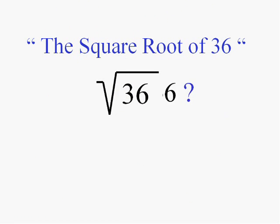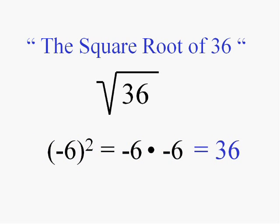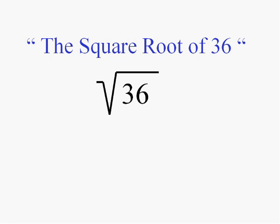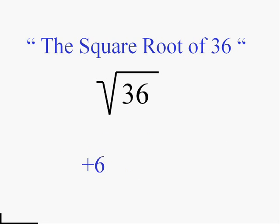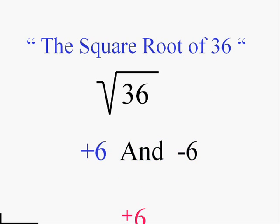The square root of 36 — could be negative 6, if you think about it, because negative 6 squared equals 36. Any positive square root is going to have two answers. The square root of 36 is going to have two answers: plus 6 and negative 6, or plus or minus 6.